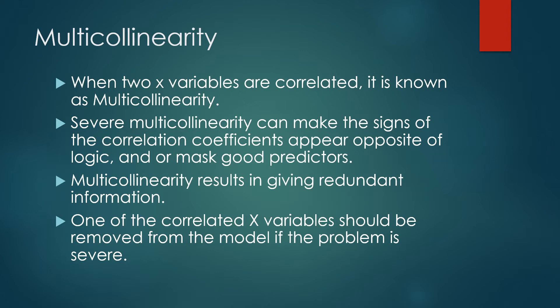So when we look at this slide, the term for two x's that are highly correlated is multi-colinearity. We're going to look in the next slide how to detect what's bad multi-colinearity that must be dealt with and what's not so bad. Severe multi-colinearity can make the signs of the correlation coefficients appear opposite of what you would logically expect. For instance, we would expect the price of the boots to go up with the cost of materials. But if it had a negative sign, that would indicate I might have a problem. It can also give redundant information. And one of the correlated x variables should be removed from the model if there's a severe problem with multi-colinearity.